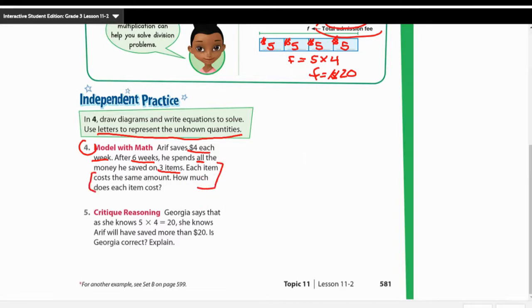Remember on all of these, on every one of these, there is also a hidden question. So always look for the hidden question. So here, we need to figure out a couple different things. That's why these are two-step problems. We have Arif saves $4 each week. After six weeks, he spends all the money.